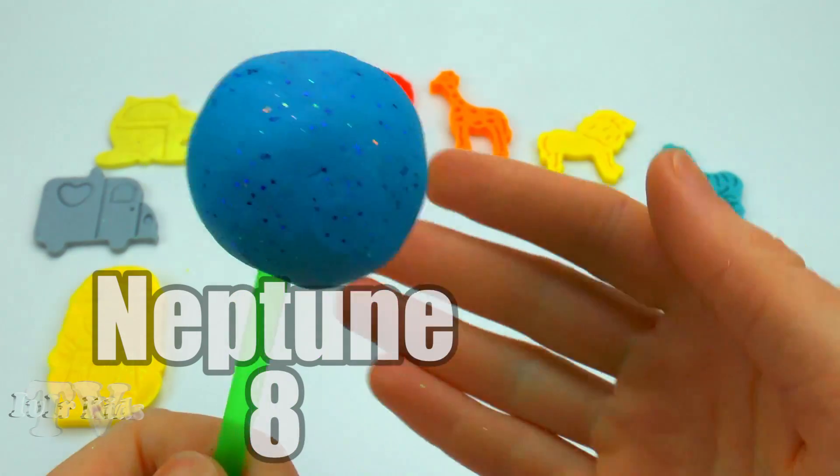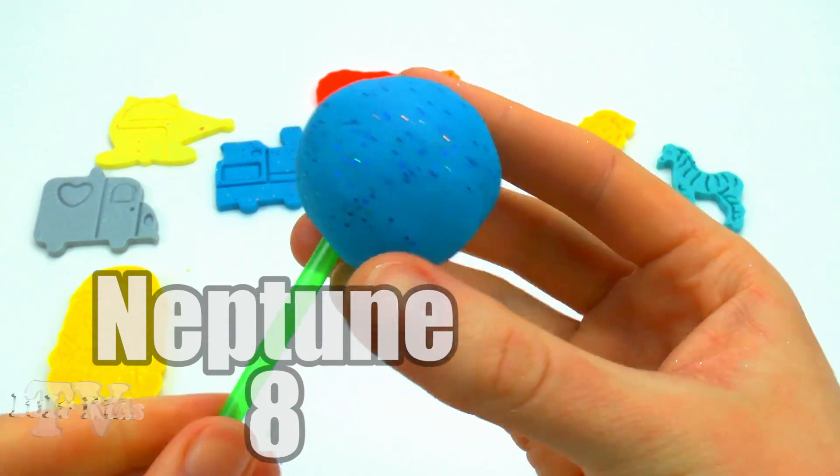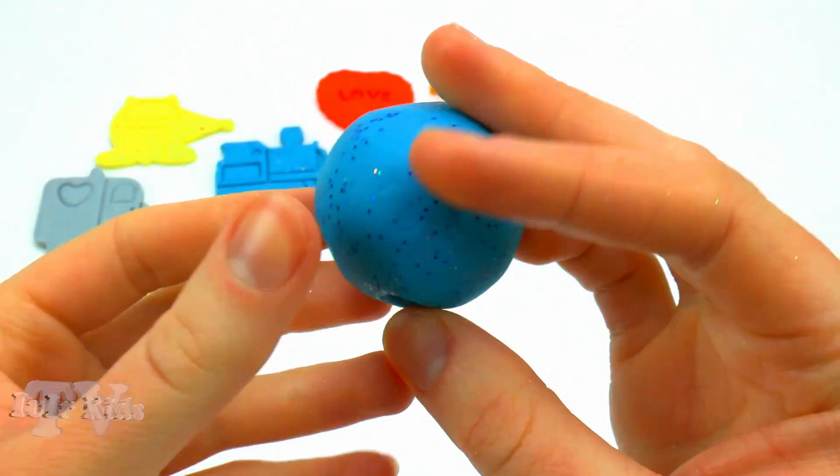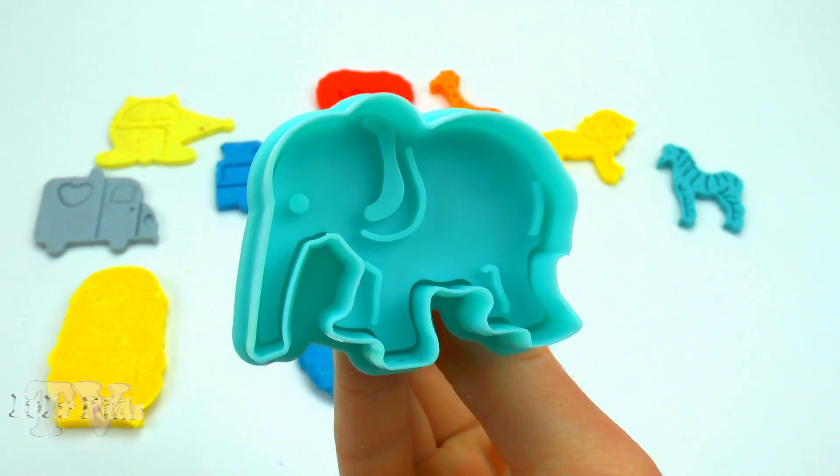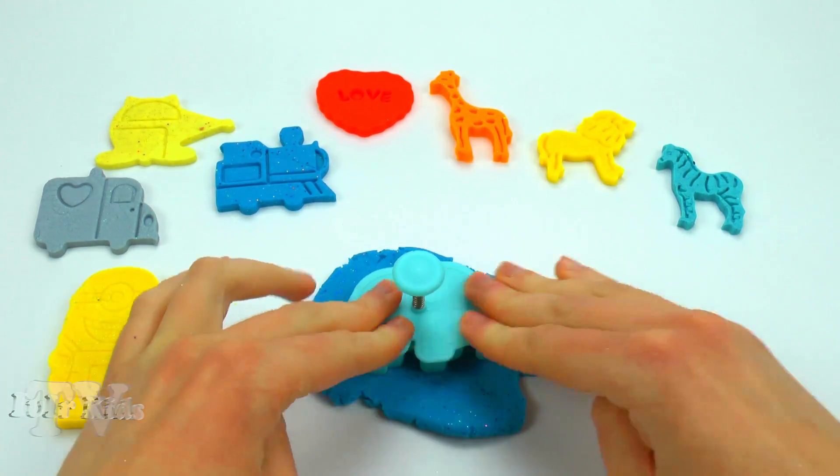Neptune. Neptune is the eighth planet of the solar system. The planet was named after the Roman god of the seas. Neptune, as well as Jupiter, Saturn and Uranus are classified as gas giants.